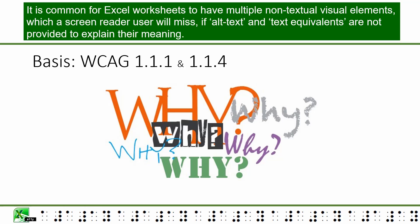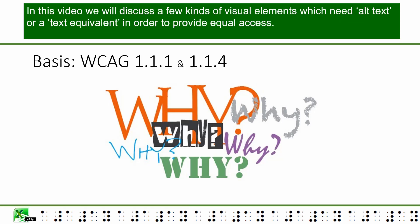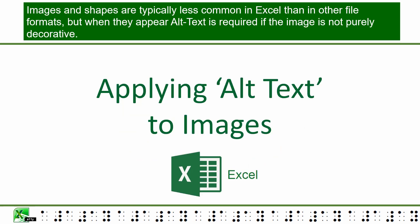It is common for Excel worksheets to have multiple non-textual visual elements which a screen reader user will miss if alt text and text equivalents are not provided to explain their meaning. In this video we will discuss a few kinds of visual elements which need alt text or a text equivalent in order to provide equal access. Images and shapes are typically less common in Excel than in other file formats, but when they appear, alt text is required if the image is not purely decorative.